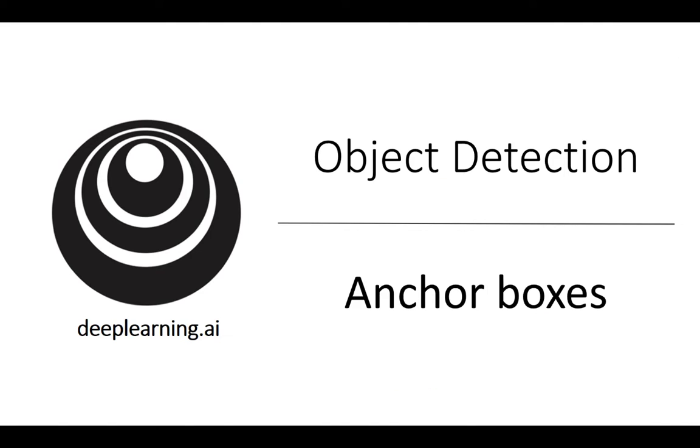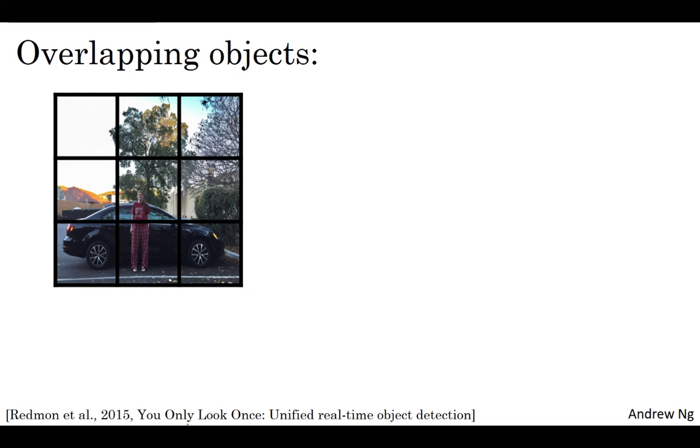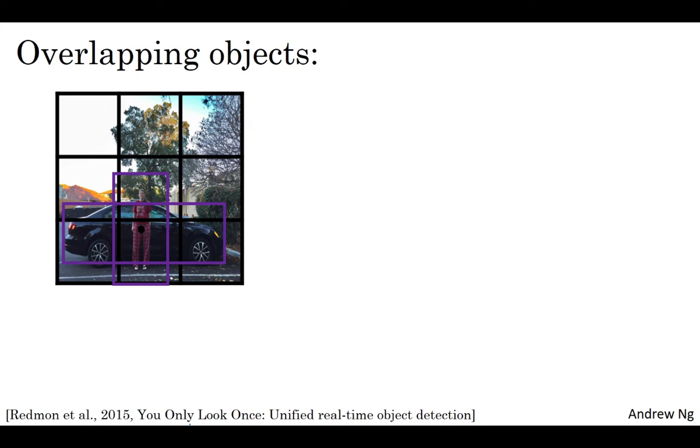Let's start with an example. Let's say you have an image like this, and for this example I'm going to continue to use a three by three grid. Notice that the midpoint of the pedestrian and the midpoint of the car are in almost the same place, and both of them fall into the same grid cell.